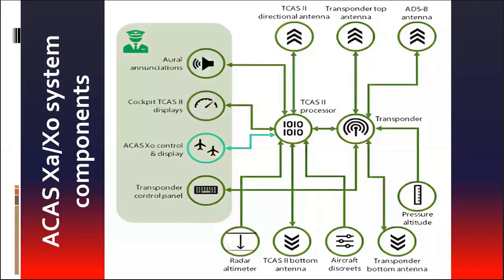ACAS-X installation is composed of: 1. A TCAS II processor unit which performs airspace surveillance, intruder tracking, threat detection, avoidance maneuver determination, and the generation of advisories. A Mode-S transponder is required to be installed and working for TCAS II to be operational. 2. The system has two TCAS II antennas. In addition, two antennas are for the Mode-S transponder. An ADS-B antenna is installed at the top of the aircraft.